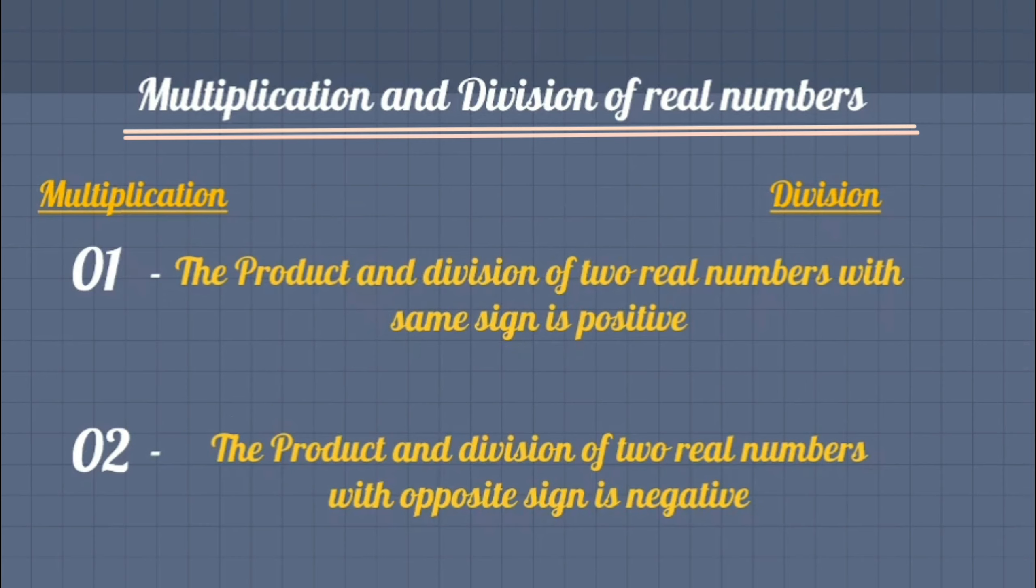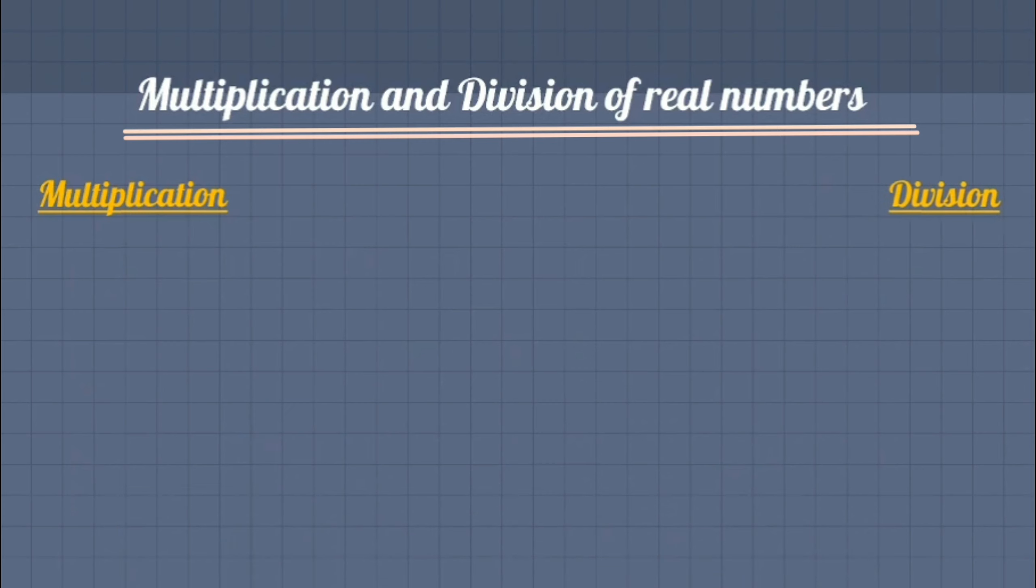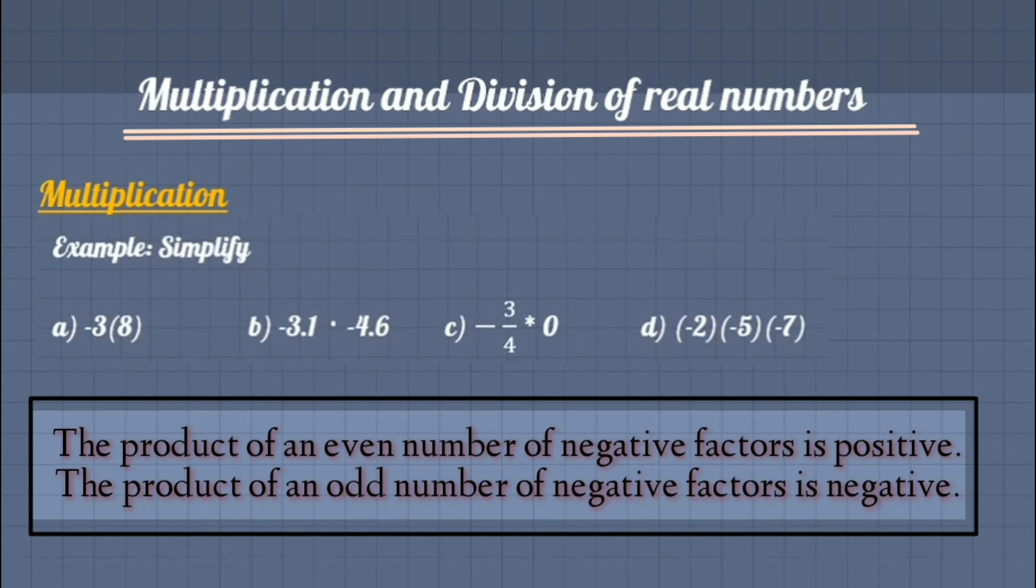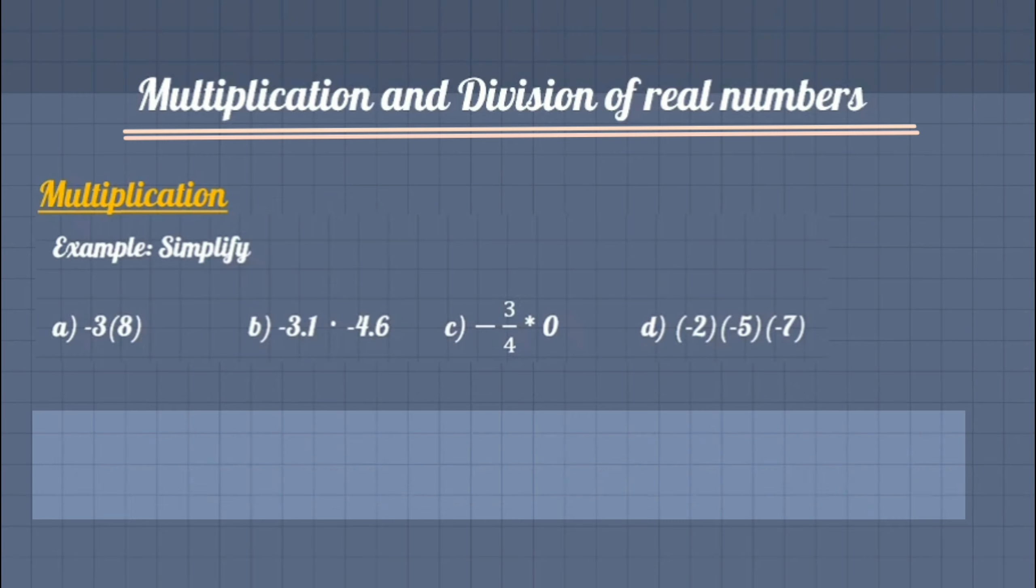And the product and quotient of two real numbers with opposite sign is always negative. Let's simplify some examples regarding multiplication and division. We simplify the first three examples just like that.